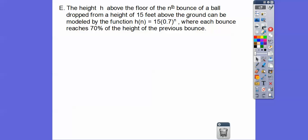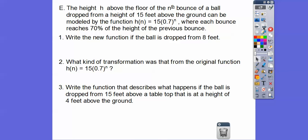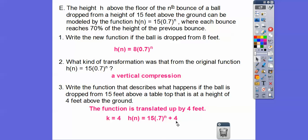The height h above the floor of the nth bounce of a ball dropped from 15 feet is modeled by the function, where each bounce reaches 70%, so 0.7 of the previous bounce. If the ball is dropped from 8 feet instead of 15, we replace 15 with 8 — that's a vertical compression since 8 is smaller than 15. If the ball is dropped from 15 feet above a tabletop that is 4 feet high, we add 4 to the function, so k equals 4, translating it up 4 feet.